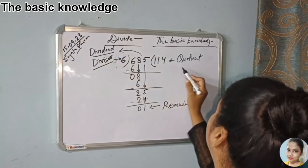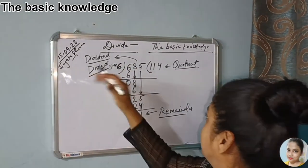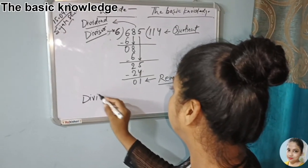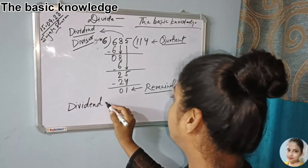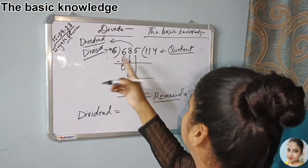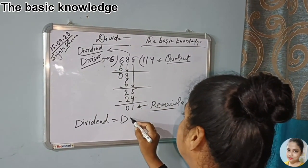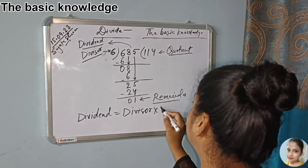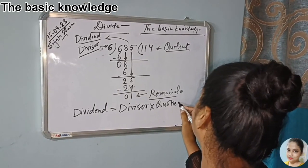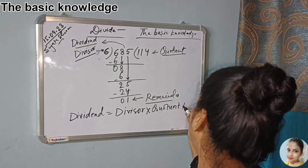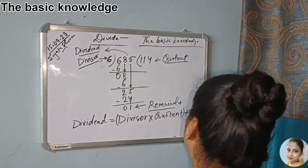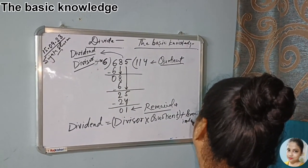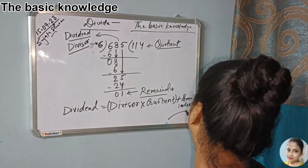And this is called the divisor. Now the relation between all these terms: Dividend is equal to Divisor multiplied by Quotient, plus Remainder. Thank you.